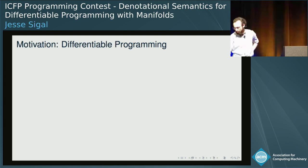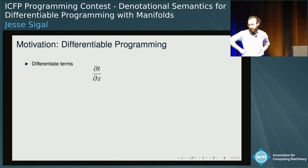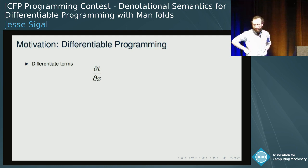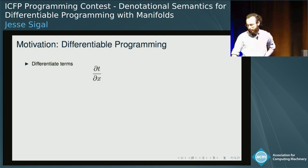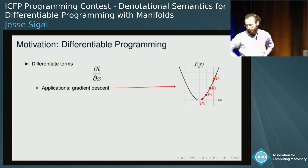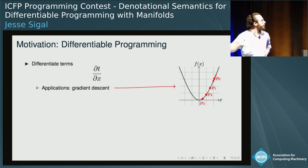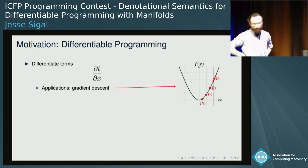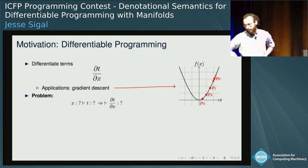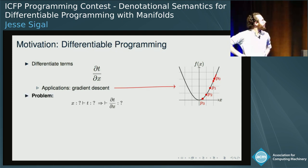What's differentiable programming? The goal of differentiable programming is to let you differentiate terms in your language with respect to free variables. One useful application is gradient descent, where you use the local gradient of your function to help you step towards the minimum. This is used in many places, from probabilistic sampling to machine learning. But there's one issue: what types should we allow in differentiation?